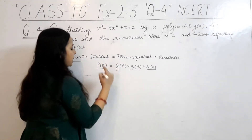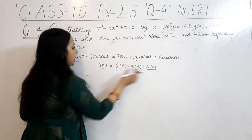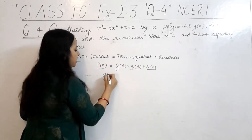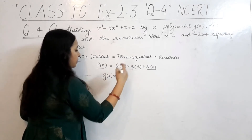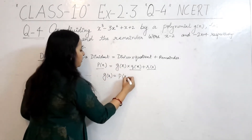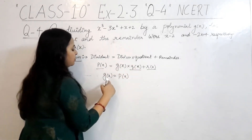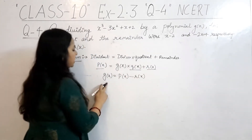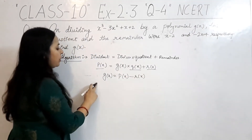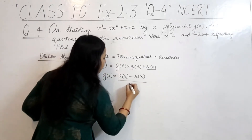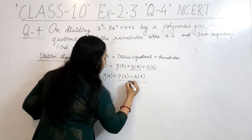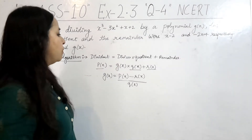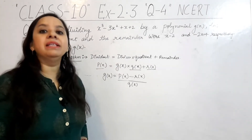So g(x) will be found by rearranging the division algorithm equation. If we change the equation in terms of g(x), then g(x) equals p(x) minus r(x), upon q(x). We just place the three known values into this equation and calculate the divisor.